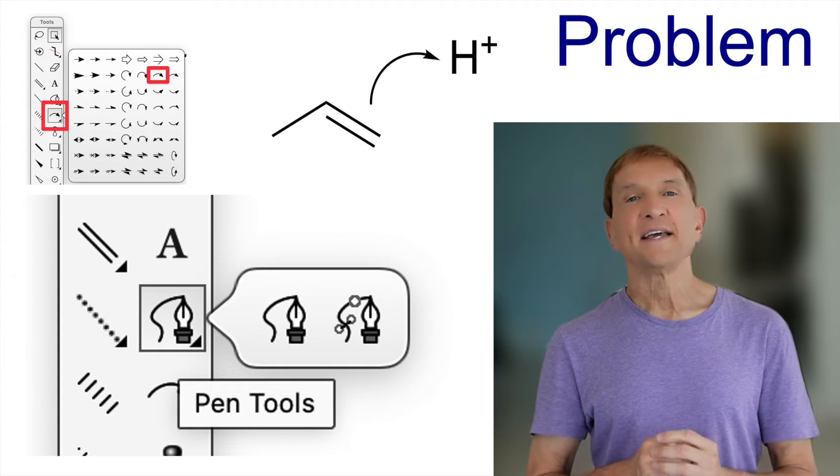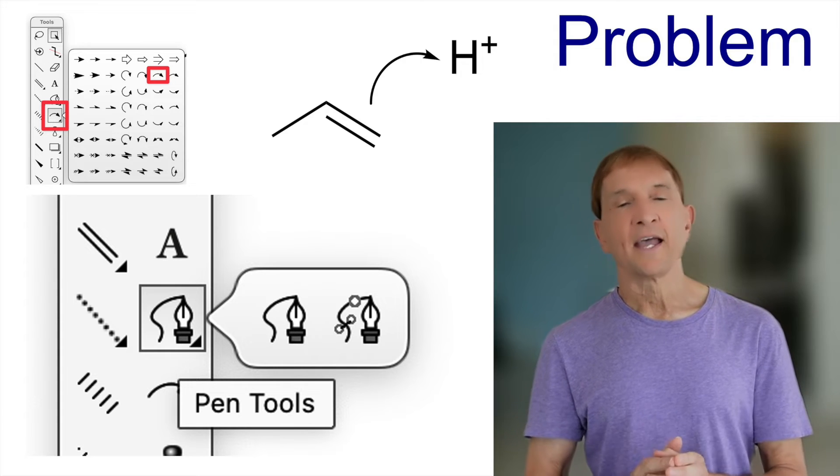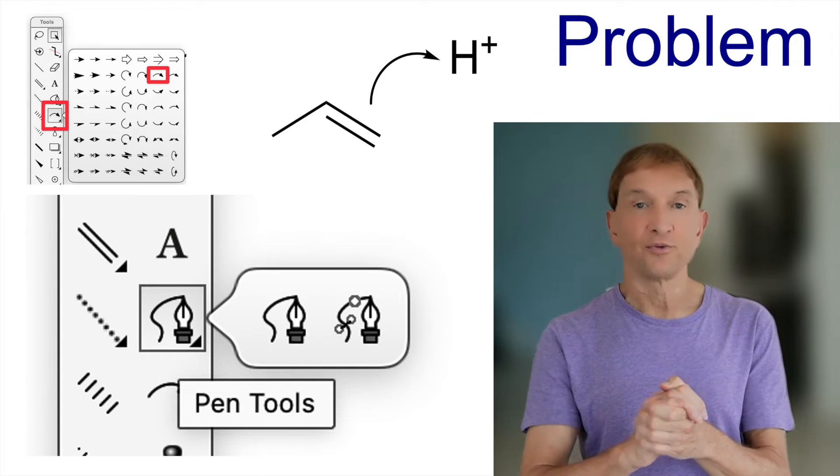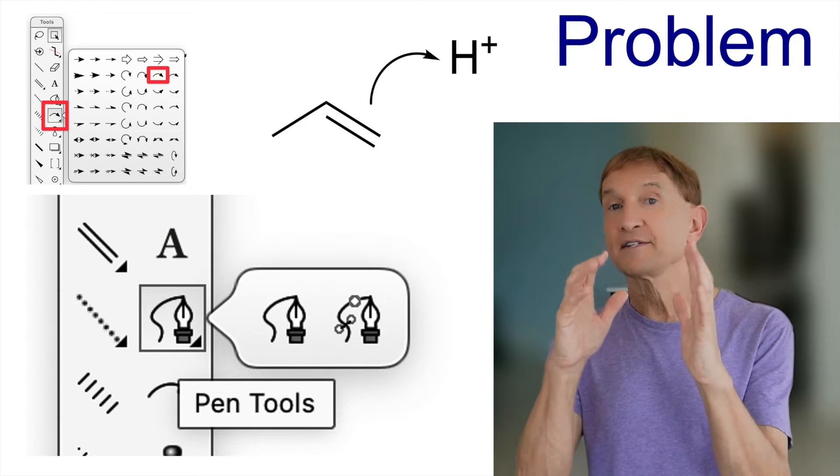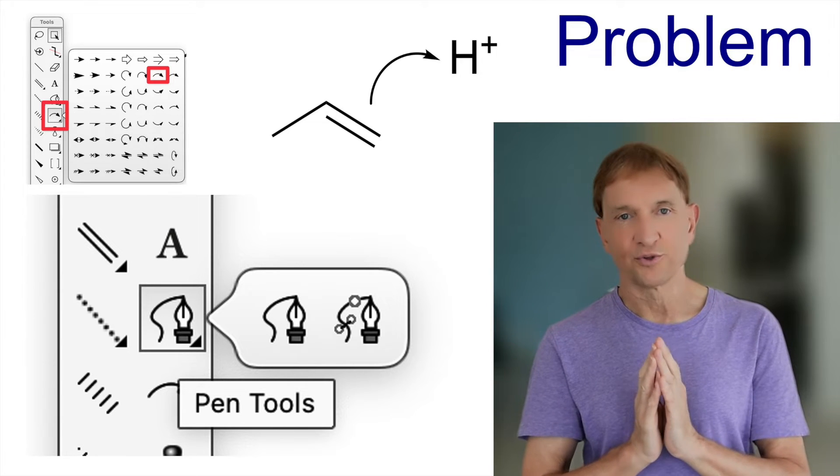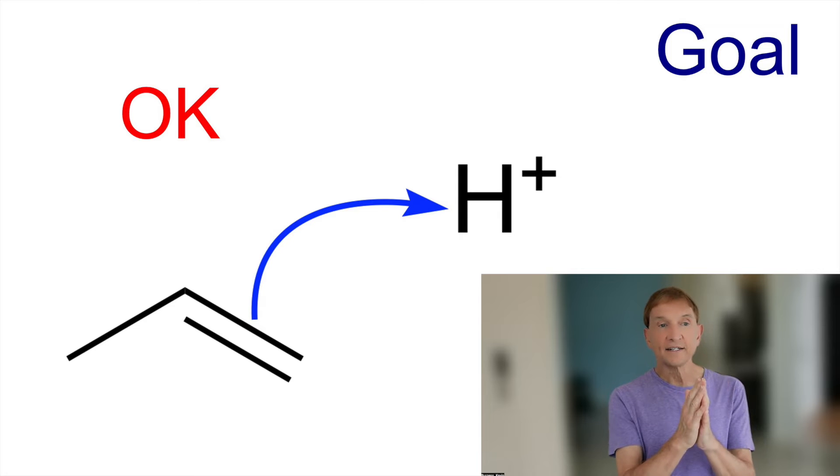The pen tool is a little bit fiddly. There are two versions of the pen tool: there's freehand and there's the vector-based pen tool. Freehand can work. If it's a simple arrow, I drew this one, looks okay, that's fine.